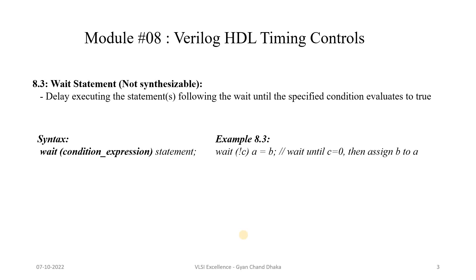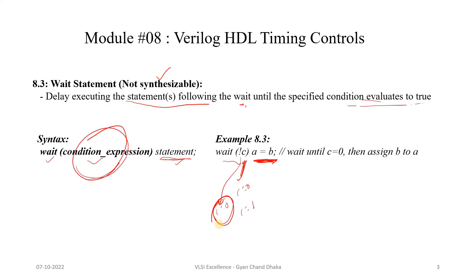Now let's see the third type of timing control statement in Verilog, which is the wait statement. The wait statement is also non-synthesizable, so we should not use it in RTL code intended to implement hardware, but we can use it in test bench simulation. It delays executing the following statements until the specified condition evaluates to true. The syntax is: `wait (condition) statements` — so once the condition becomes true, the statements get executed.